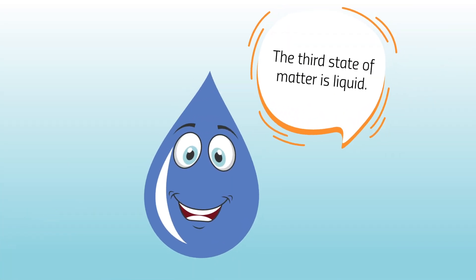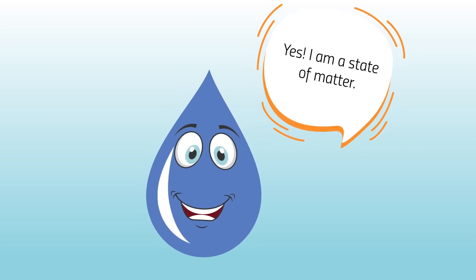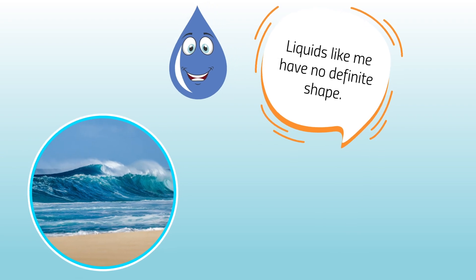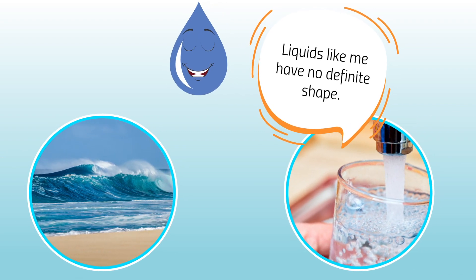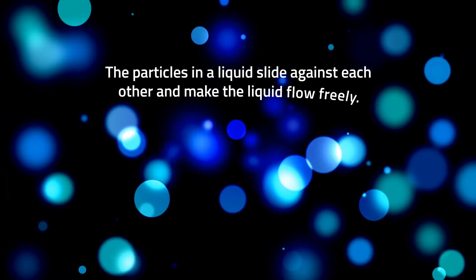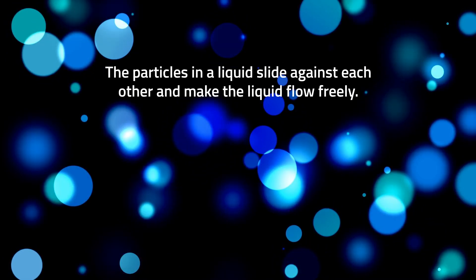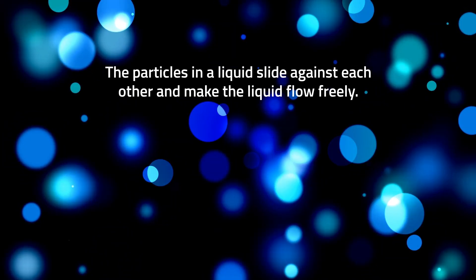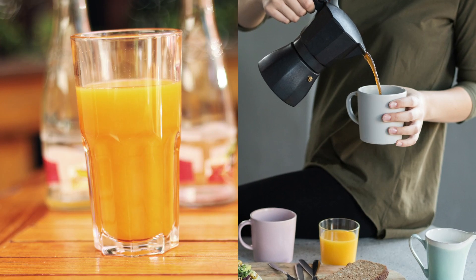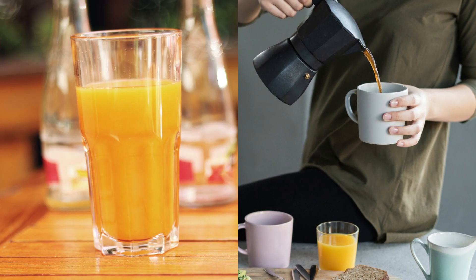The third state of matter is liquid. Yes, I am a state of matter. Liquids like me have no definite shape. The particles in a liquid slide against each other and make the liquid flow freely to take the shape of its container. Liquids may have taste and smell. They also occupy space.